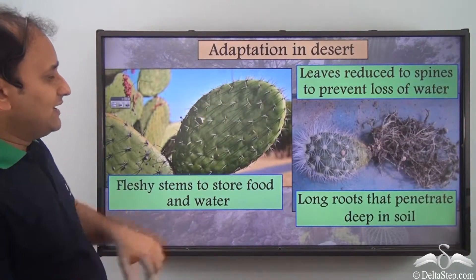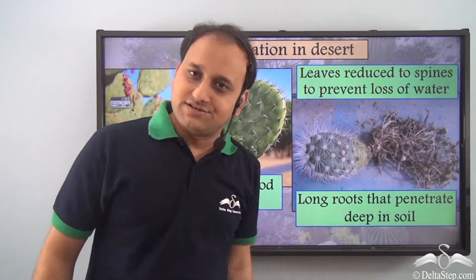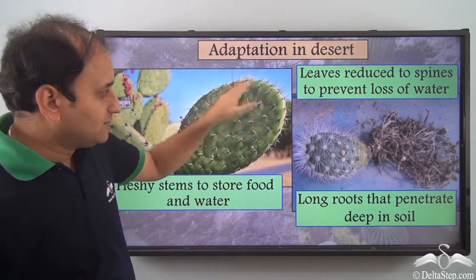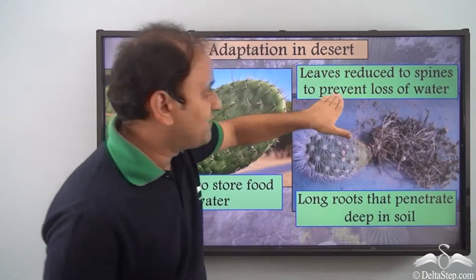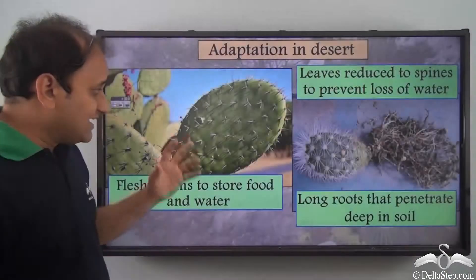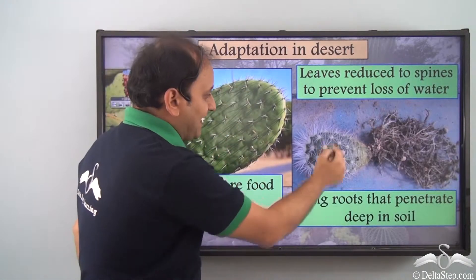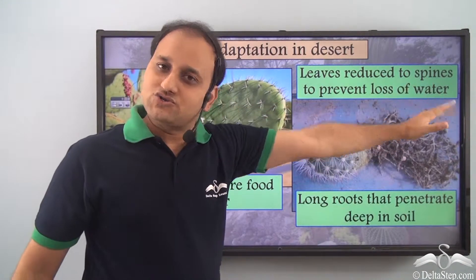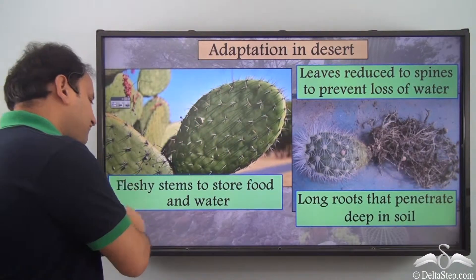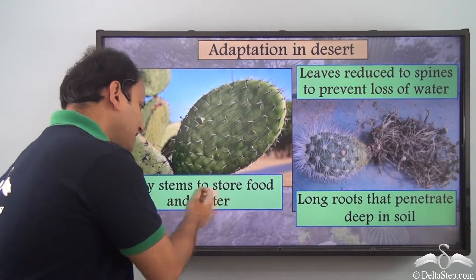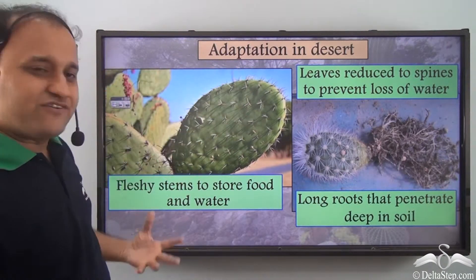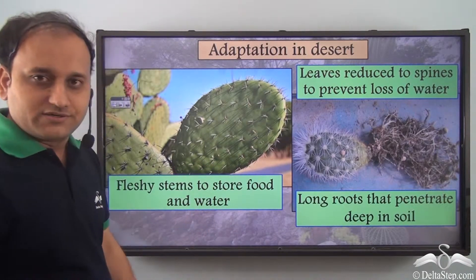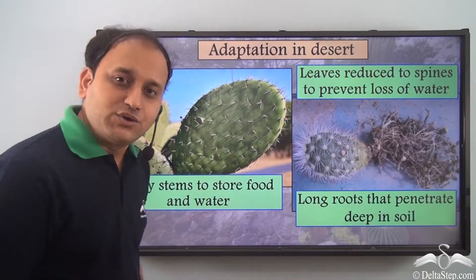Let's understand adaptation in deserts. How do plants adapt in deserts? First, leaves are reduced to spines to prevent loss of water — we can clearly see leaves reduced to spines because the plants want to prevent water loss. Also, they have fleshy stems to store food and water. You can clearly see the stem is very fleshy so that it can store food and water, because the desert is very difficult to live in.